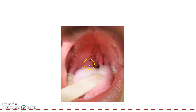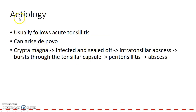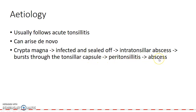This picture shows a patient with peritonsillar abscess. Now let us see about the etiology of this condition. It usually follows acute tonsillitis, but it can arise de novo also. One of the crypts of the tonsil, usually the crypt magna, gets infected and sealed off, leading to the formation of an intratonsillar abscess. This intratonsillar abscess bursts through the tonsillar capsule, leading to peritonsillitis and the formation of a peritonsillar abscess.